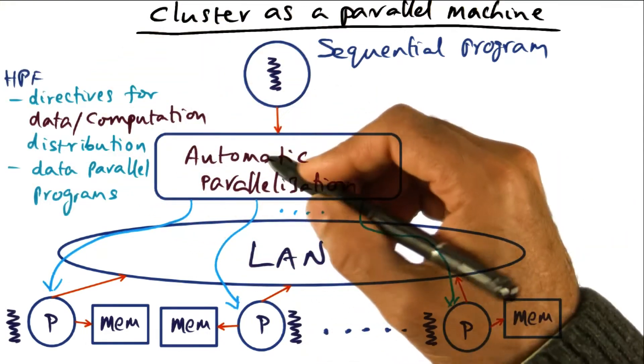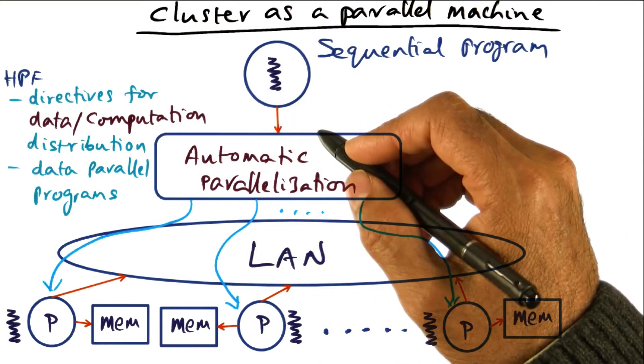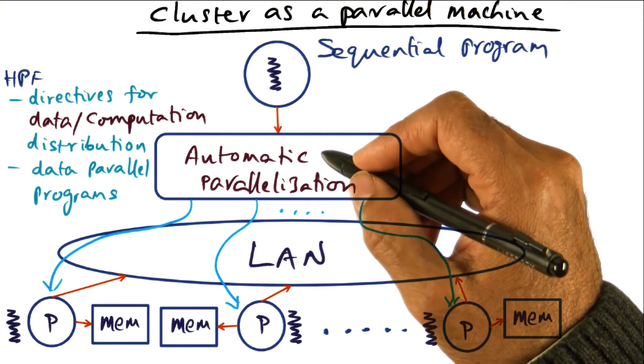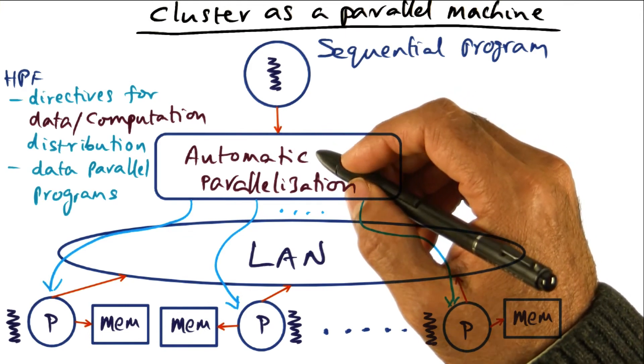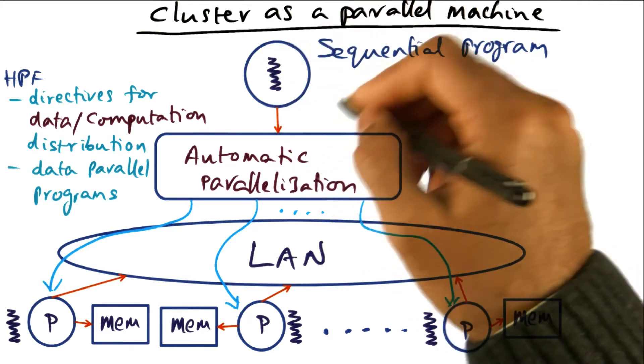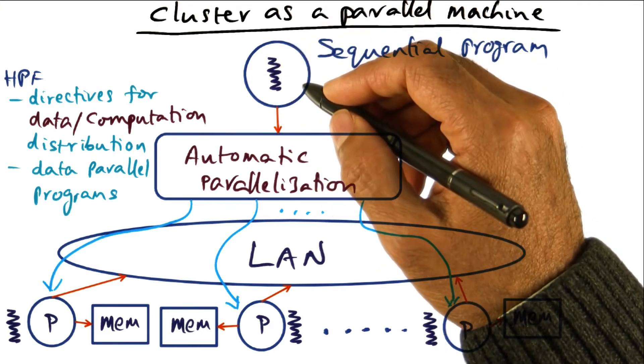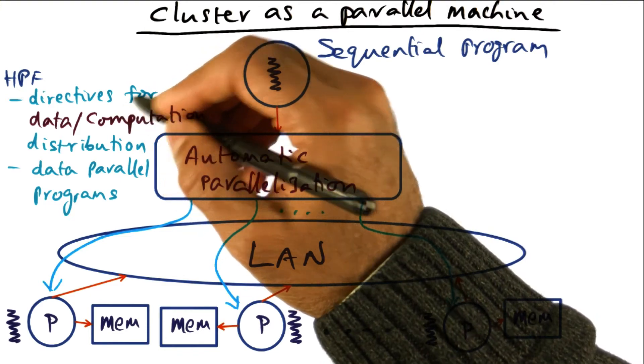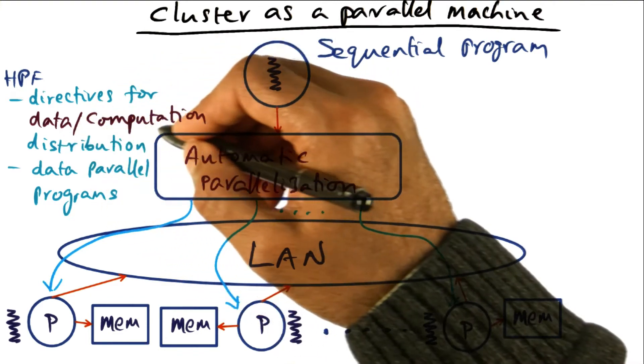So High Performance Fortran is an example of a programming language that does automatic parallelization. But it is user-assisted parallelization in the sense that the user who is writing the sequential program is using directives for distribution of data and computation.